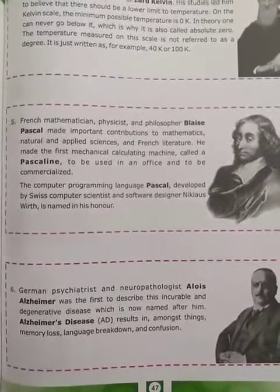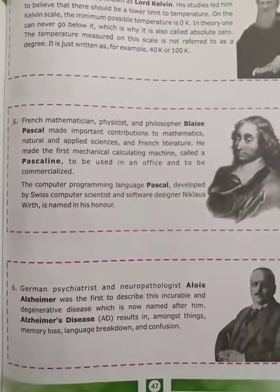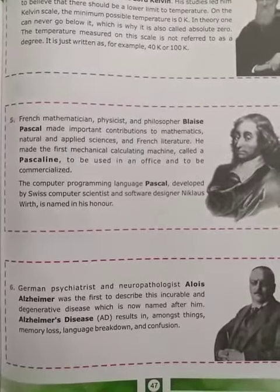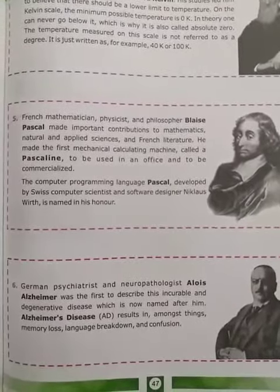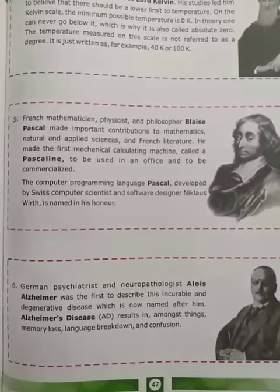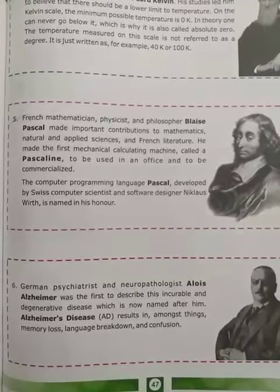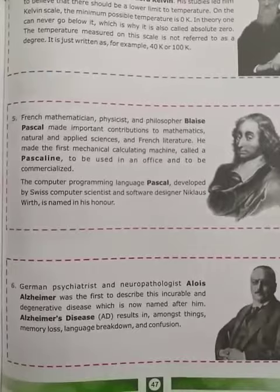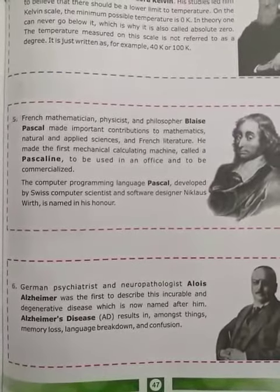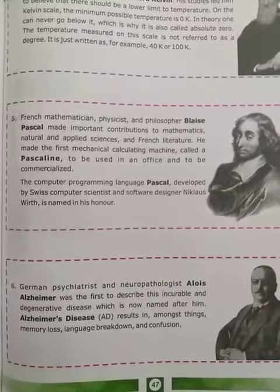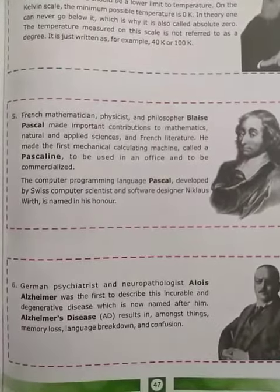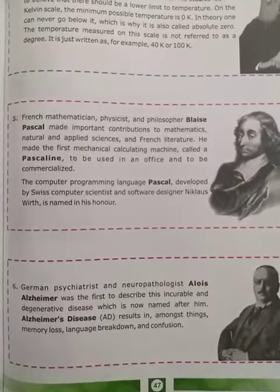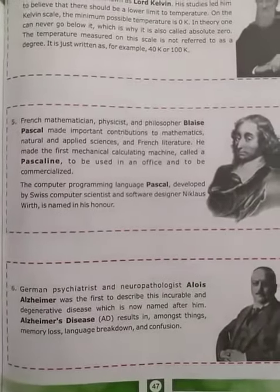Sixth, German psychiatrist and neuropathologist Alois Alzheimer was the first to describe this incurable and degenerative disease, which is now named after him — Alzheimer's disease — which results in, among other things, memory loss, language breakdown, and confusion. Seventh is an Englishman legend.